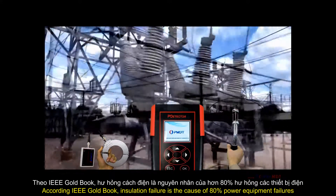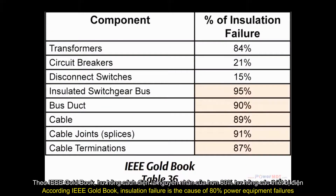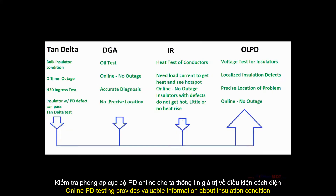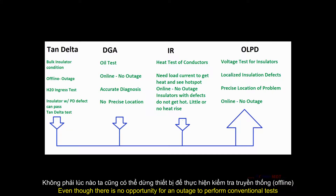According to the IEEE Gold Book, insulation failure is the cause of 80% of power equipment failures. Online PD testing provides valuable information about insulation condition even when there is no opportunity for an outage to perform conventional tests.